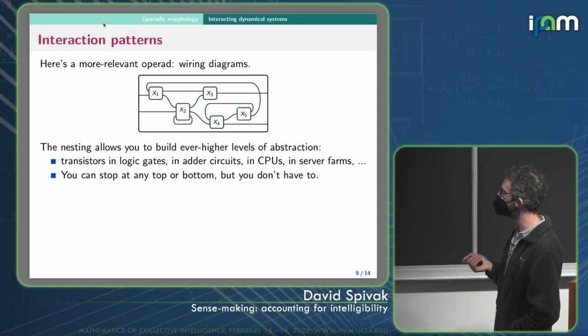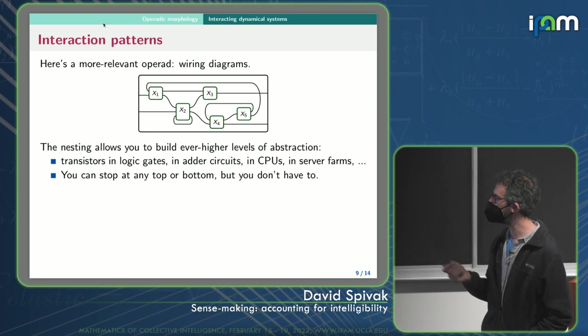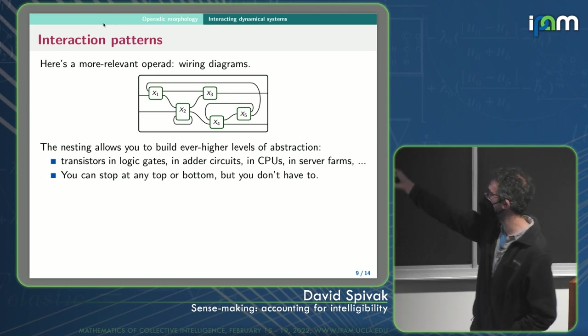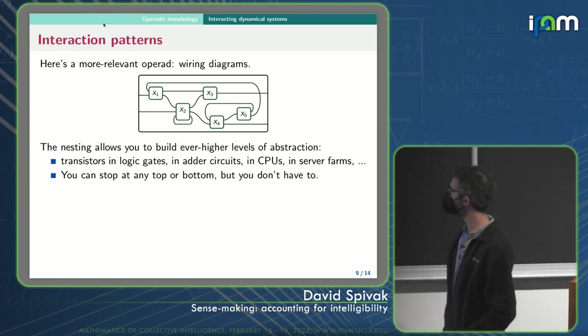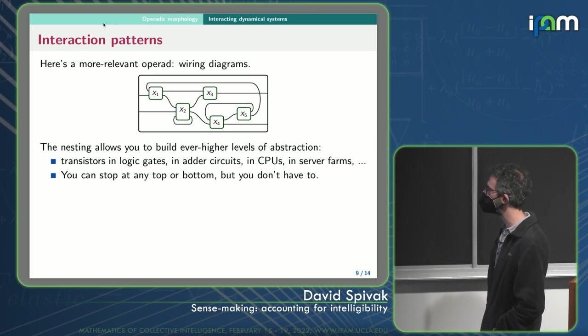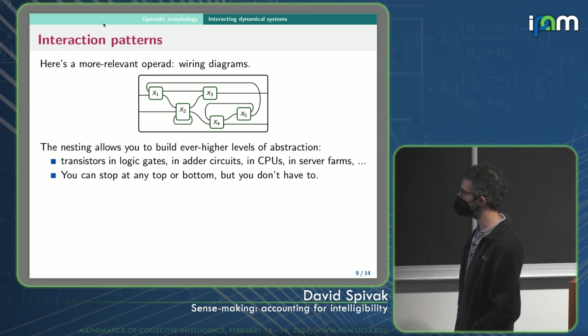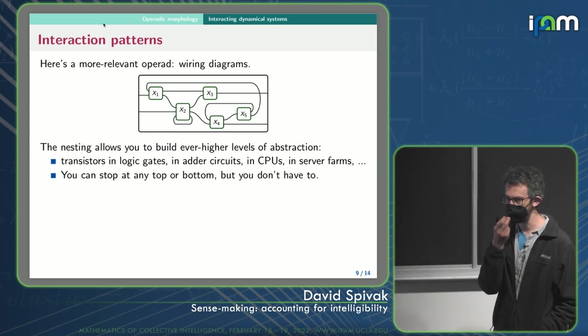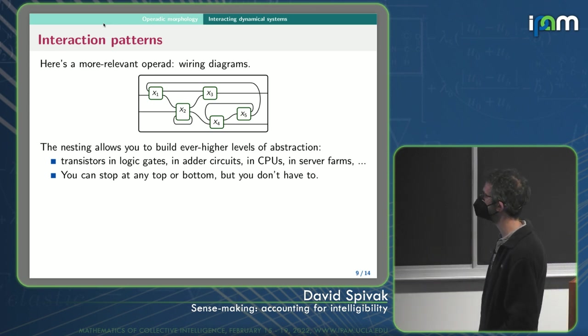So here the objects are going to be boxes that have input ports on the left and output ports on the right. So this big box around the outside there has two input ports on the left and two output ports on the right, whereas X3 has two input ports on the left and one output port on the right. So those are the interfaces, X1, X2, X3, X4, X5, and the big thing, and all other possible ones. So all the possible interfaces would be you specify a number of ports on the left and right.